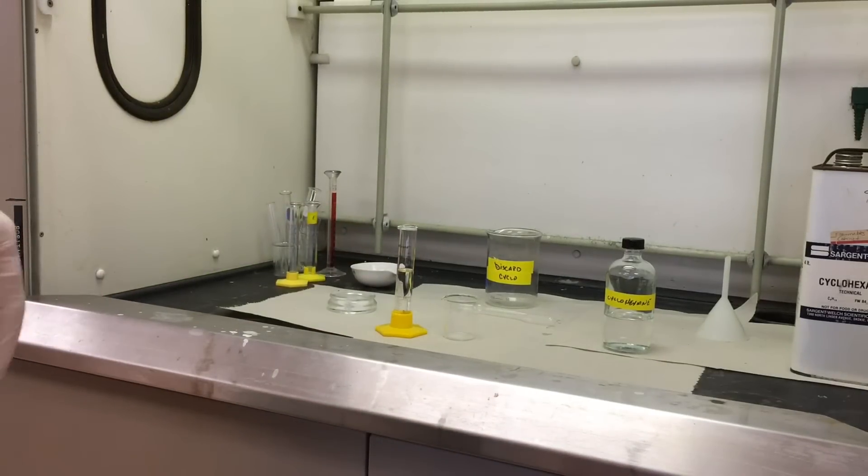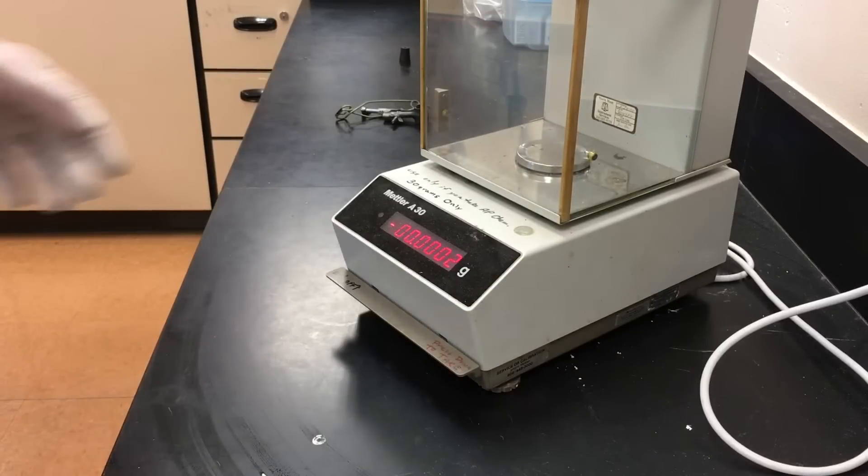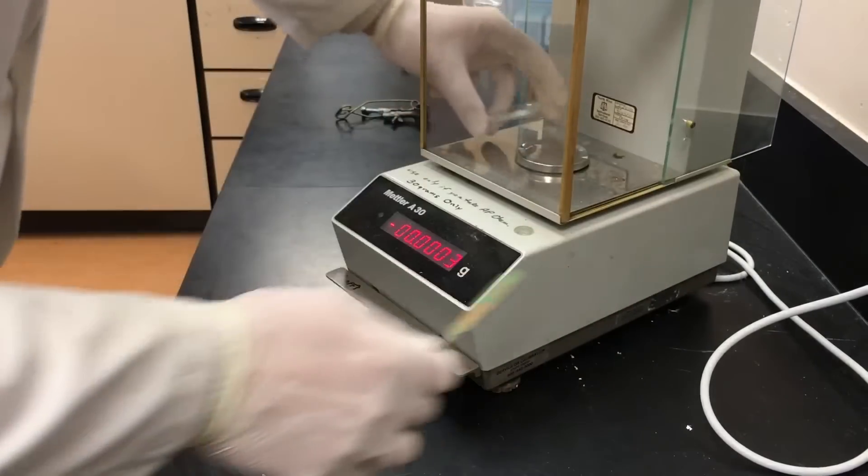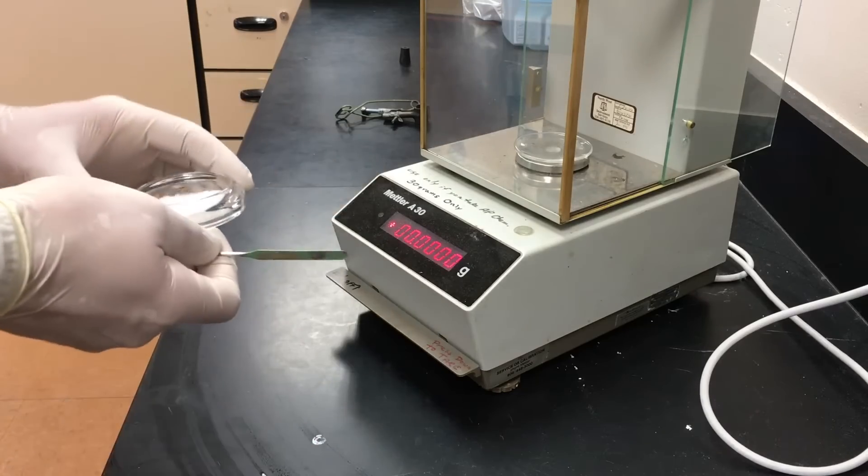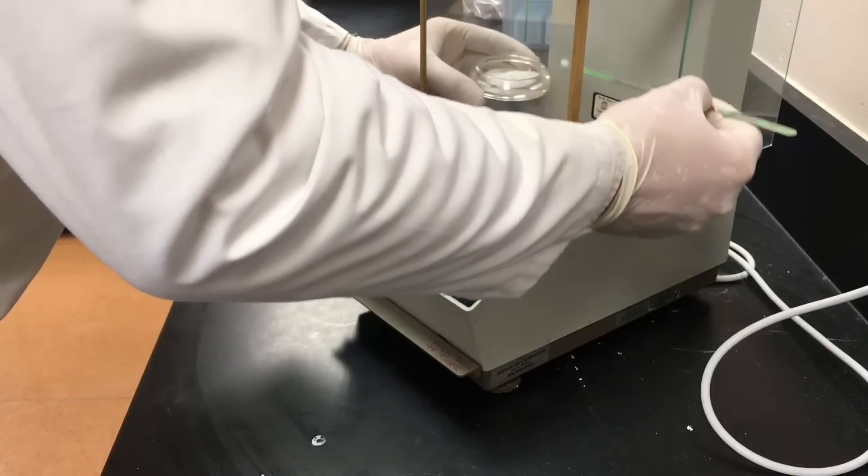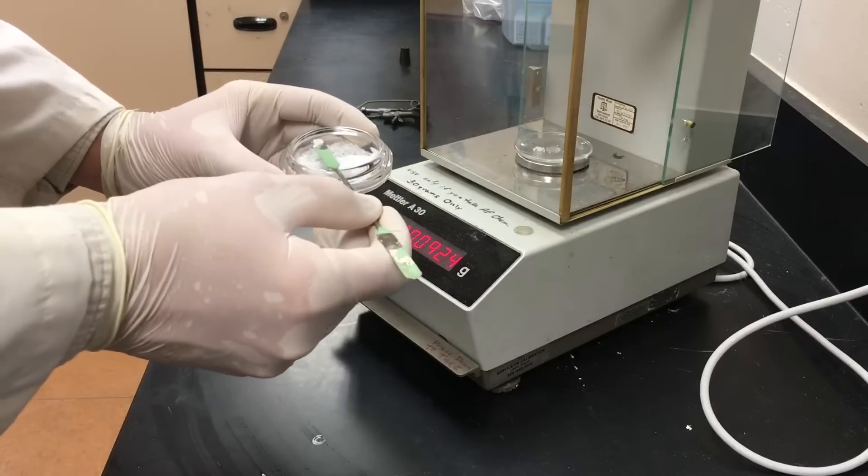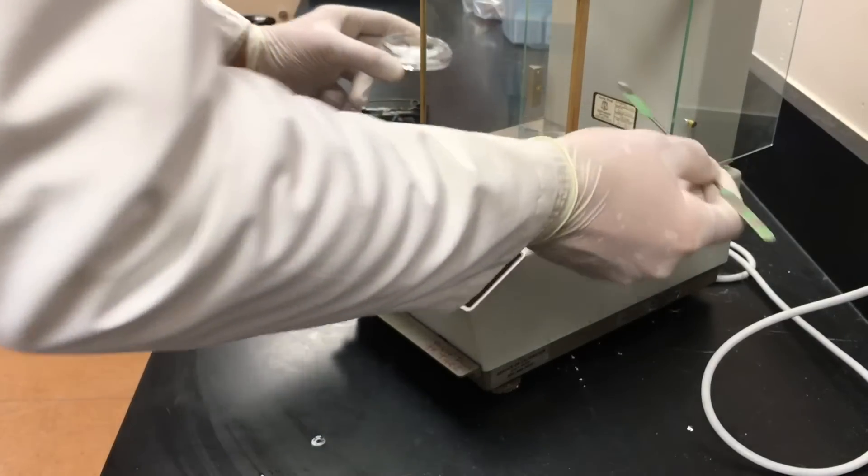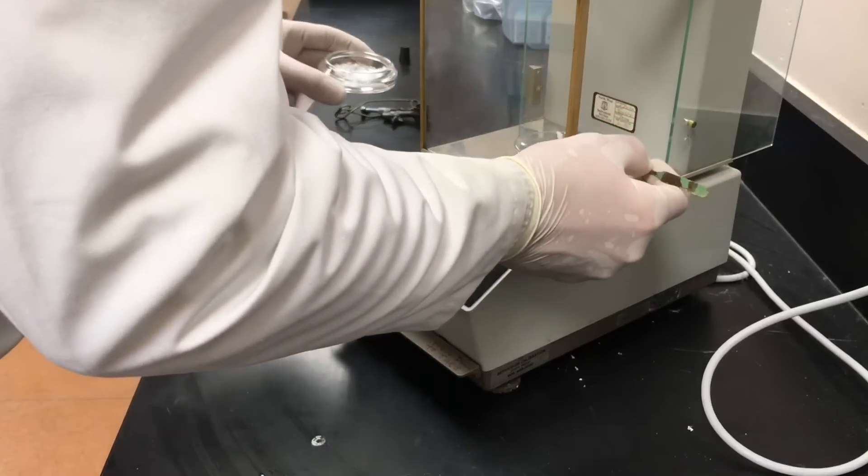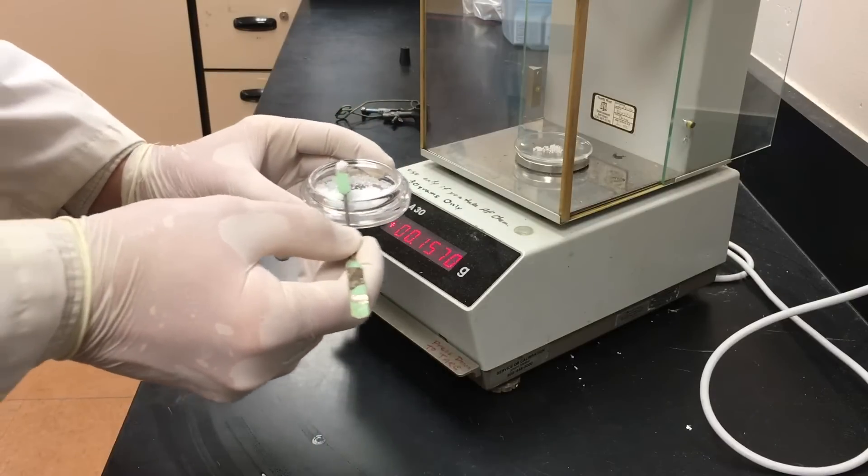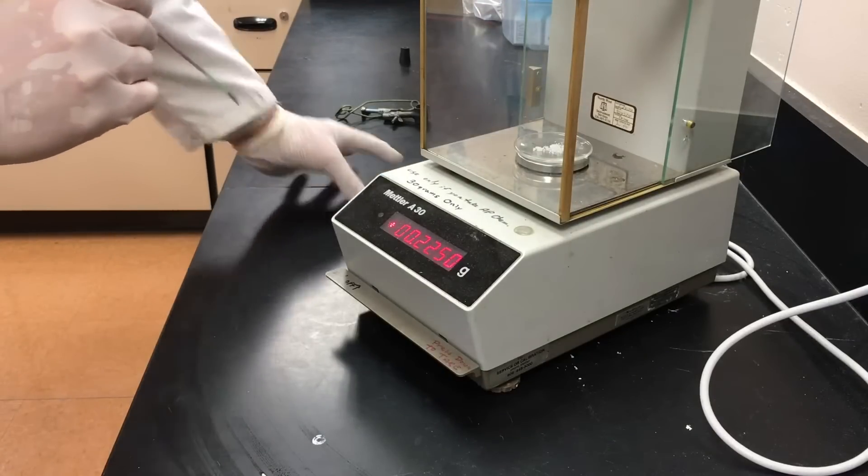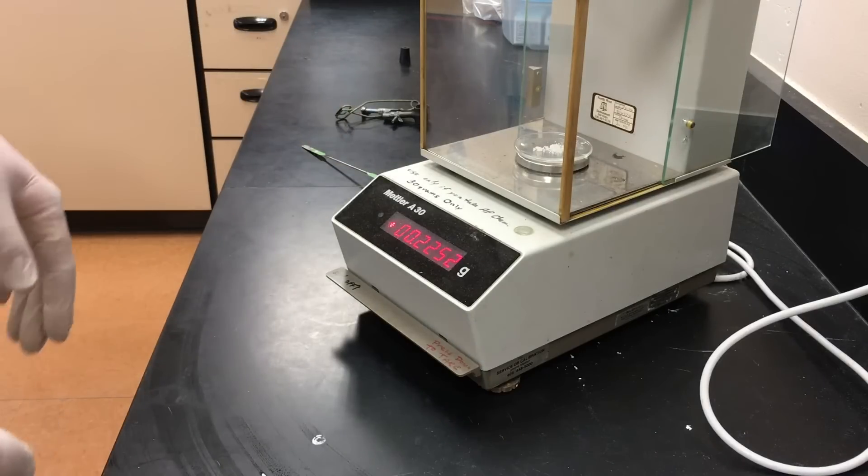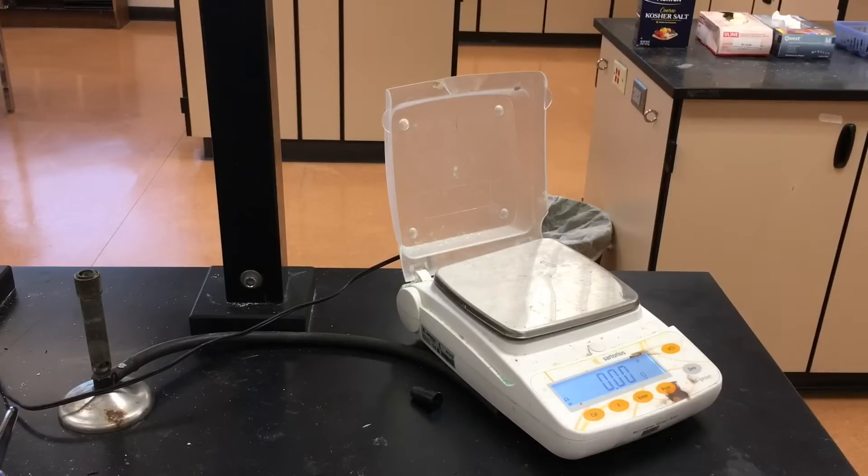Now measuring the mass of the unknown, we're gonna use the analytical scale. What we need to do is to measure about 0.2 to 0.3 grams of the unknown. We're gonna zero the scale. Anywhere from 0.2 to 0.3 is gonna give us a good temperature change, but not too much so that we're wasting the reagents. 0.2 to 0.52 or 0.50. We'll wait for it to settle so we know exactly how much unknown we have.